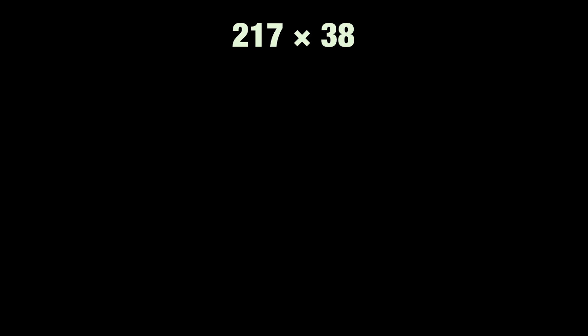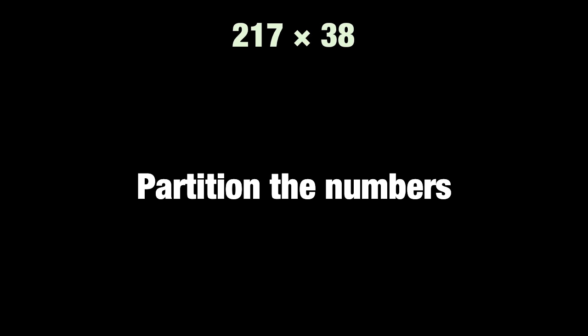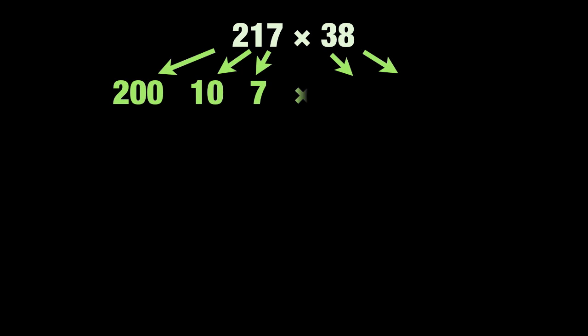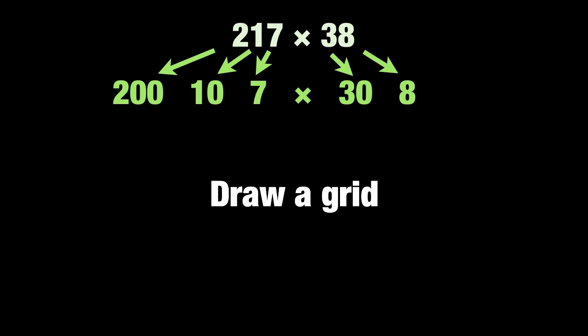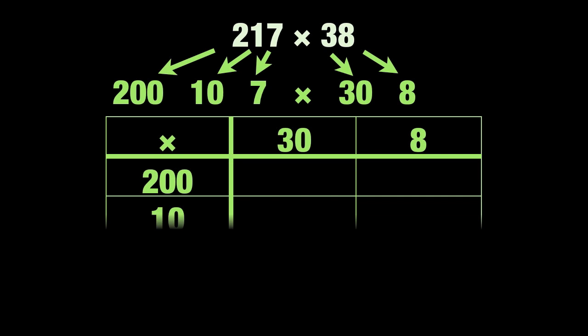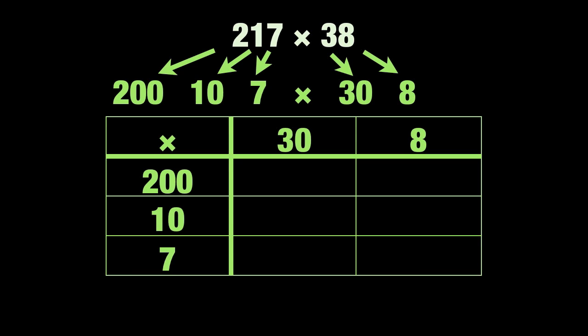Now we're going to move onto something slightly harder: hundreds, tens and units multiplied by tens and units — 217 and 38. First we need to partition the numbers, that means break them up into tens and units. So they become 200, 10, and 7, times 30 and 8. Next we need to draw a grid to place the numbers in. It's very simple. Now we can start multiplying.